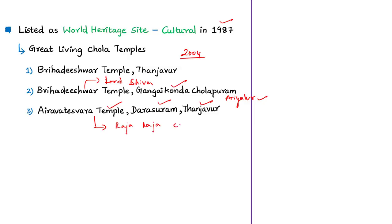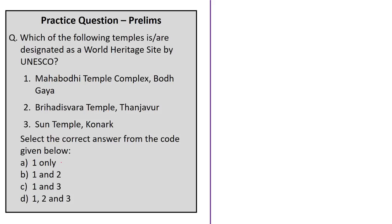UNESCO calls these three Chola temples the 'Great Living Chola Temples.' In the context of the consecration ceremony of the Brihadiswara temple, we have discussed the significance of this temple and also some of the important UNESCO World Heritage Sites. The displayed practice question will be discussed at the end of the session.